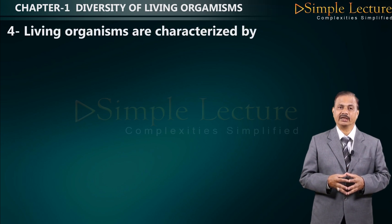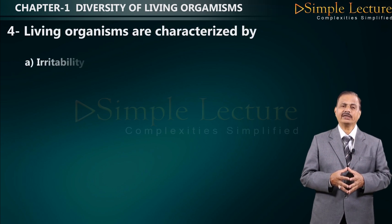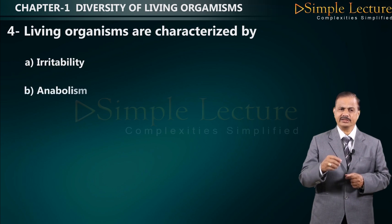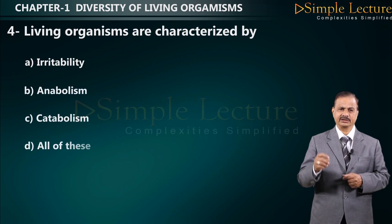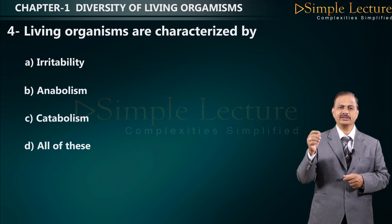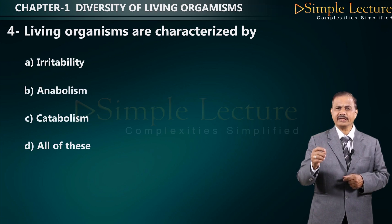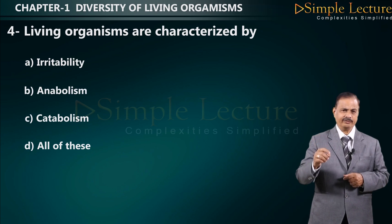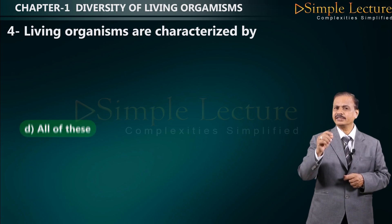Question number four: living organisms are characterized by — options are A: irritability, B: anabolism, C: catabolism, D: all of these. Irritability, anabolism, and catabolism are all characteristics of a living organism, therefore the correct answer is D: all of these.